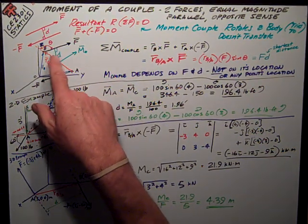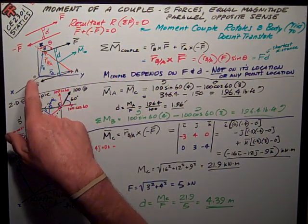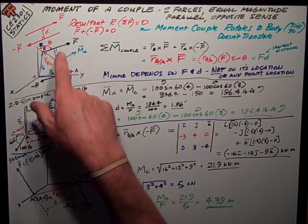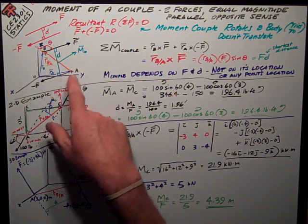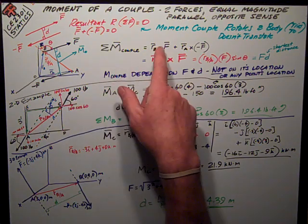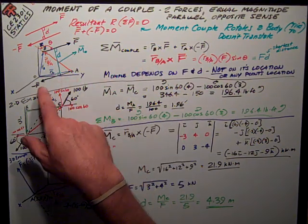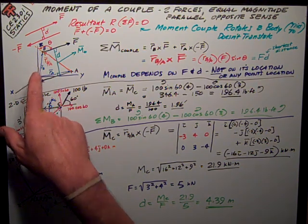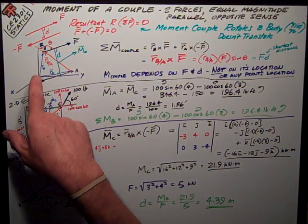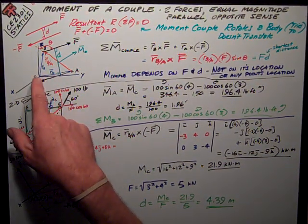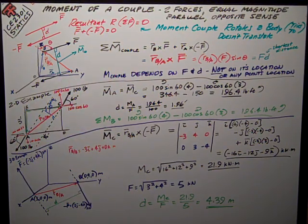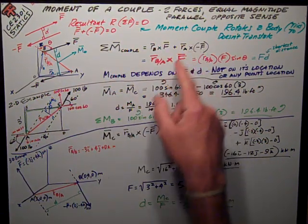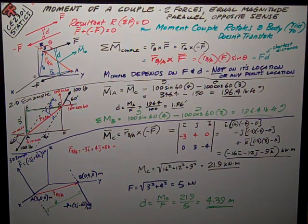One is to take some point, in this case the origin, and sum the moments caused by each one of those two forces, F and negative F, about point O. Here would be my position vector RB from O to B, RA from O to A. I would just do the cross product and add them up and get a moment.